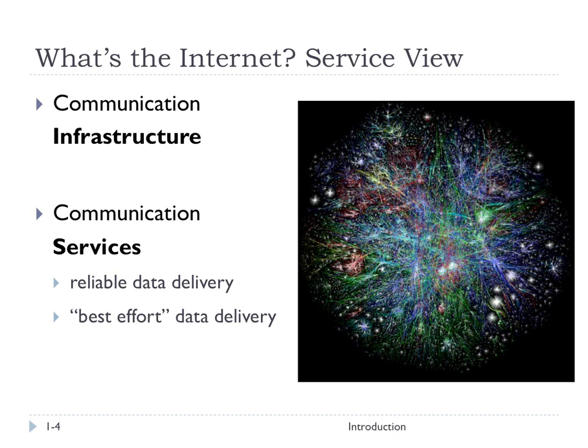Secondly, the internet provides communication services — things like reliable data delivery between point A and point B. It might also provide a different kind of service called best effort data delivery. Best effort really means unreliable; we'll do our best, but it may not get there. IP, the internet protocol, is a best effort data delivery protocol that makes no guarantees. TCP, another protocol you've probably heard of, is a reliable data delivery protocol that delivers data in order and reliably.